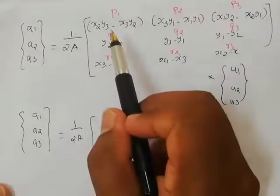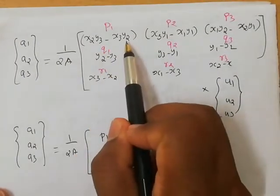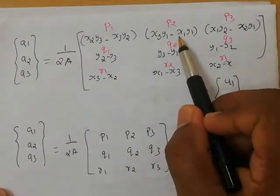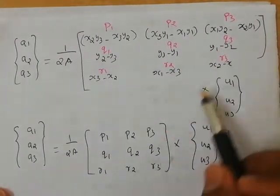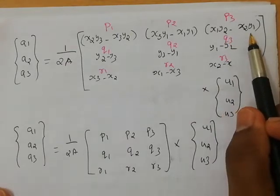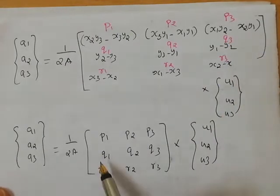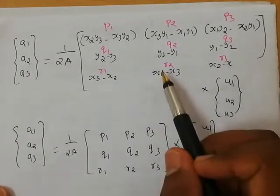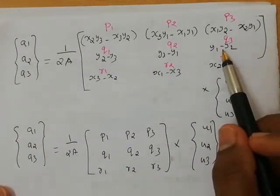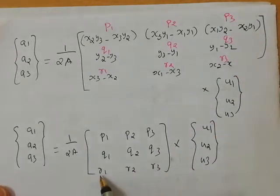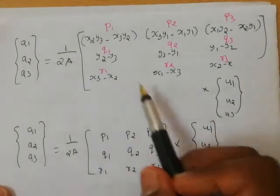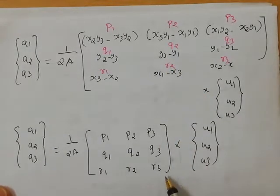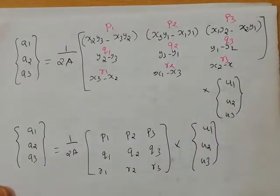Here P1 = x2*y3 minus x3*y2, P2 = x3*y1 minus x1*y3, and P3 = x1*y2 minus x2*y1. Similarly, Q1 = y2 minus y3, Q2 = y3 minus y1, Q3 = y1 minus y2, R1 = x3 minus x2, R2 = x1 minus x3, and R3 = x2 minus x1.